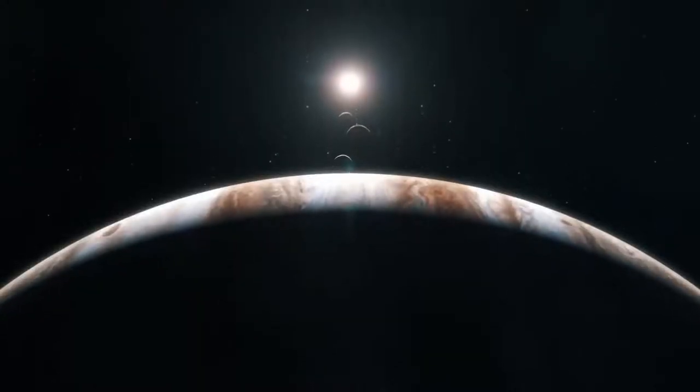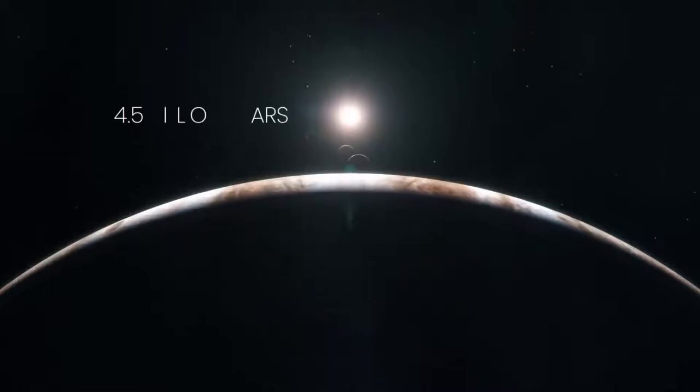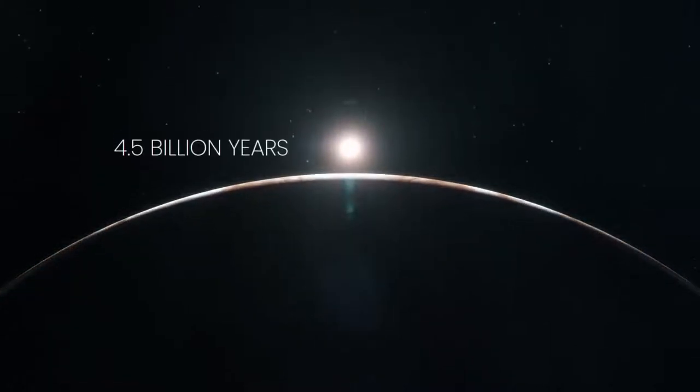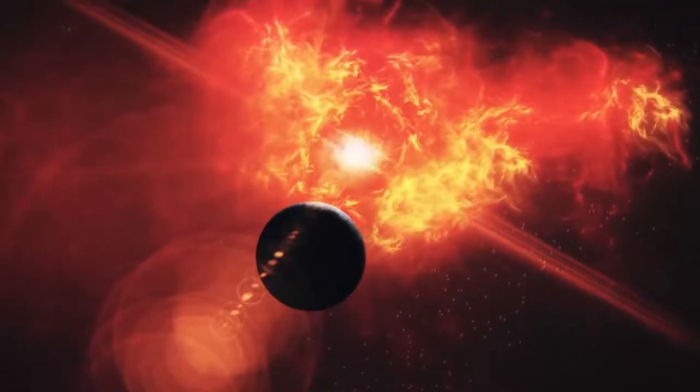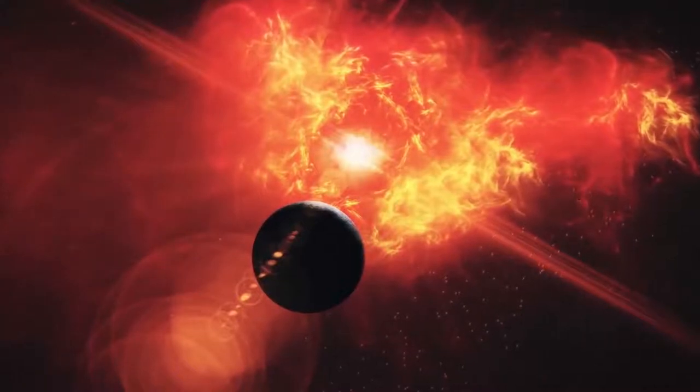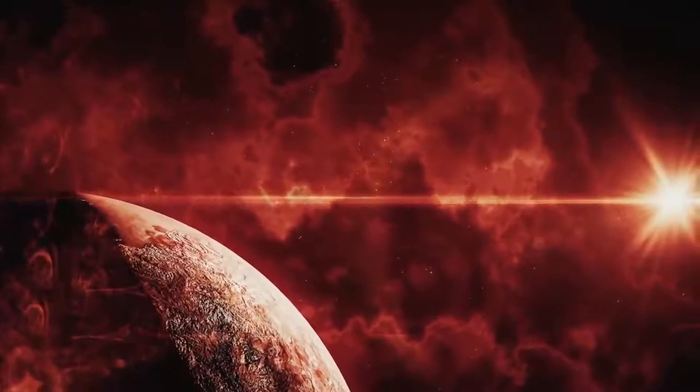Our own sun, a yellow dwarf, has had a stable existence for over 4.5 billion years. But this is not always the case for different stars in other systems. But we'll talk more about different types of stars in a moment.